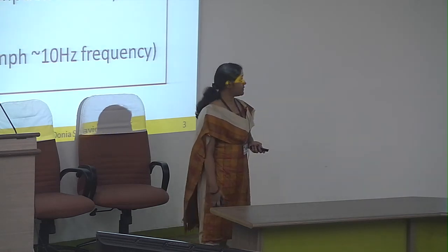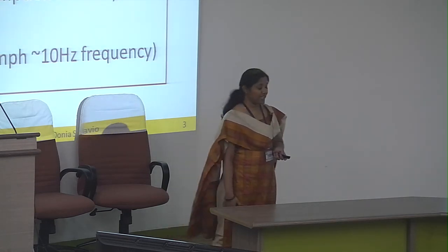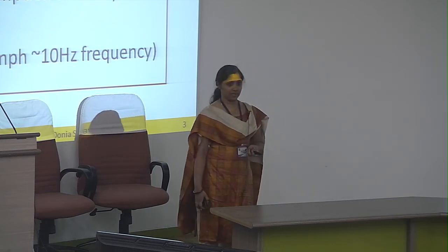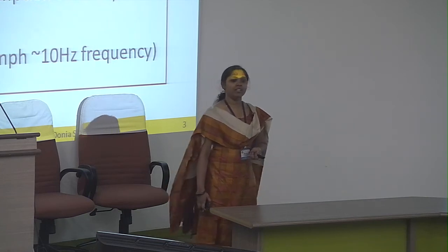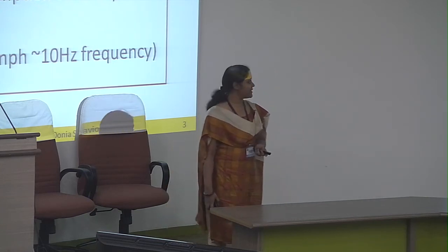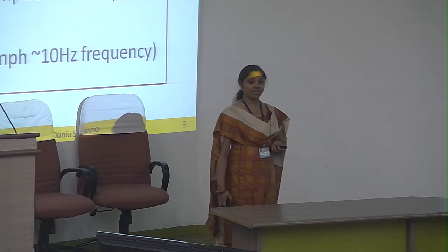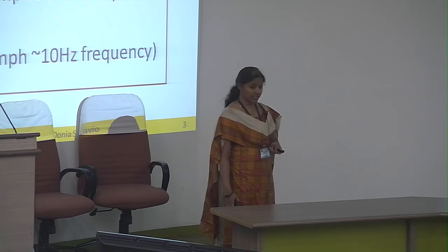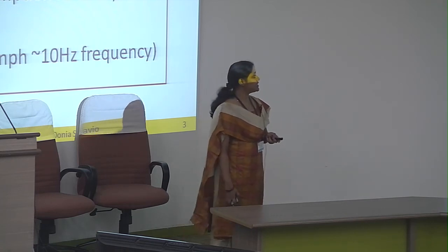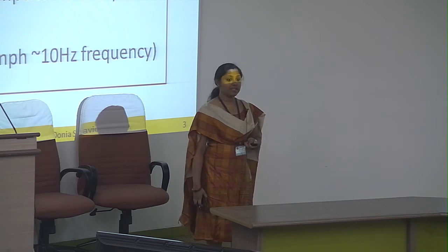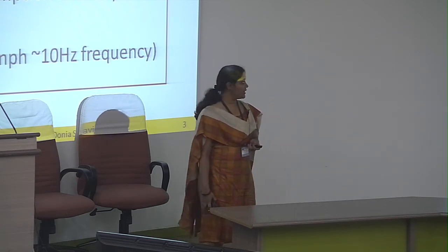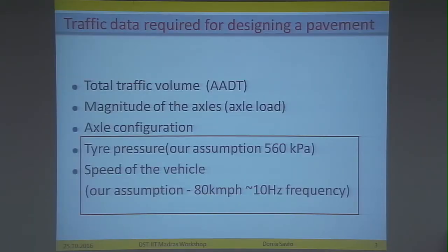We assume the vehicle tire pressure to be 560 kPa and the speed of the vehicle is assumed to be 80 kilometers per hour. But we all know that the vehicles plying on Indian highways are not plying at 80 kilometers per hour — they are plying at much lower speeds, and the tire pressure is also much higher.